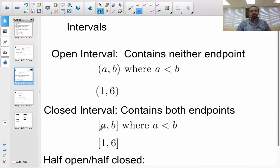A closed interval, we use these braces, these brackets, A to B, again, where A has to be less than B for this to make any sense. And 1 to 6 is going to be containing 1 and containing 6, as well as all the points in the middle.